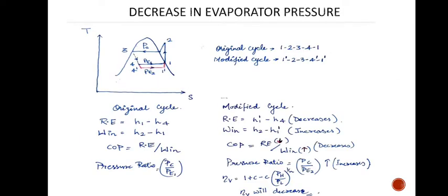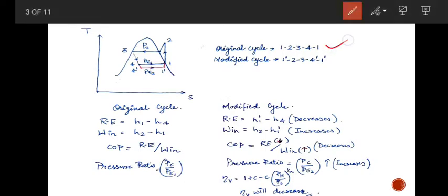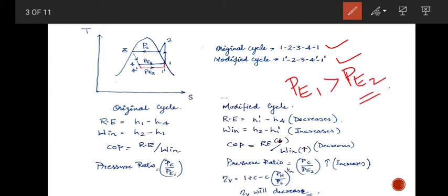The first point is decrease in evaporator pressure. If we decrease the evaporator pressure, what effect on our cycle will occur? The original cycle is 1-2-3-4-1 and the modified cycle is marked in red as 1'-2'-3-4'-1'. In this case the pressure decreases from Pe1 to Pe2. For the original cycle, the refrigerating effect is H1 minus H4, and for the modified cycle it will be H1' minus H4'.